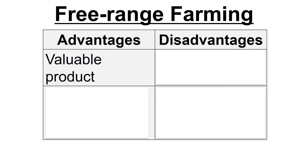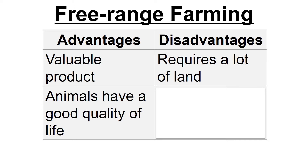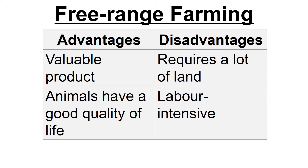For free range farming, an advantage is that you get a more valuable product. If you go to a supermarket, eggs marketed as free range command a higher price from ethically-aware consumers. From the animal's point of view, they have a better quality of life. Disadvantages include needing more land and being more labour intensive, since you have a larger area to manage rather than animals packed into a small space.